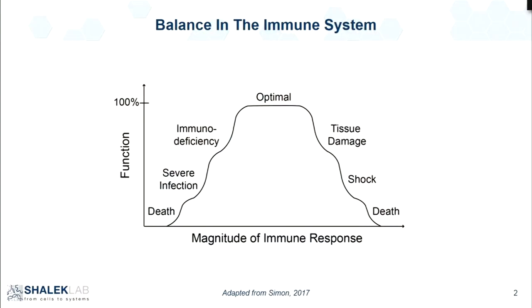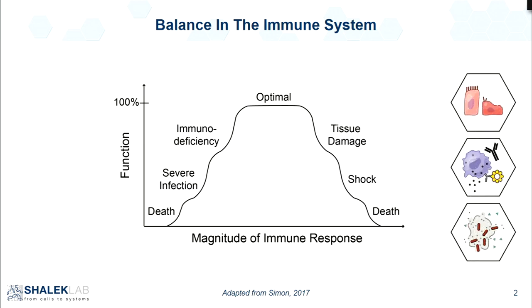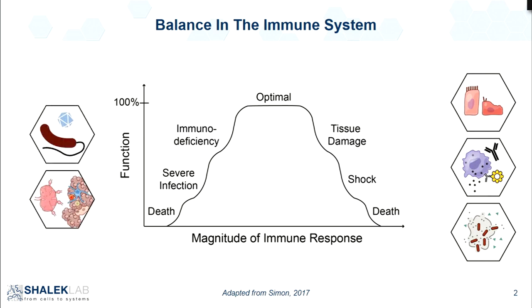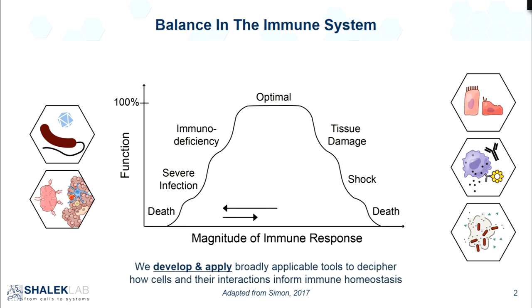My lab is interested in how balance is achieved in the immune system. Balanced immune responses are incredibly important. If you have over-exuberant immunity, you can become susceptible to allergy or tissue damage. And if you have hypoimmunity, you can become susceptible to opportunistic infections and the outgrowth of things like cancers. What we do in my lab is we develop and apply technologies that help us understand what constitutes immune homeostasis, what are the deviations induced by disease, and how to rebalance the system therapeutically or prophylactically.